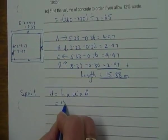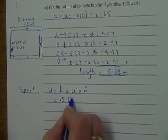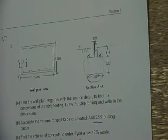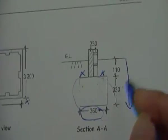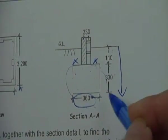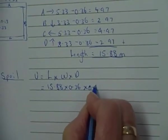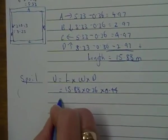My length is 15.88 times the width of the footing, 0.36 times the depth. Remember, the depth for the spoil is from ground level, so that's going to give me 0.44.